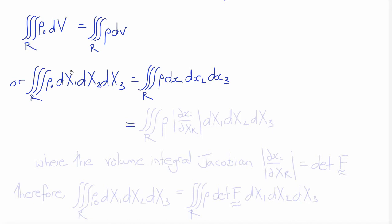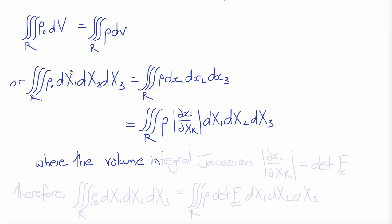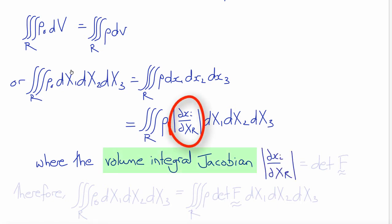We need to convert deformed coordinates to undeformed coordinates in our integral. We do that using partial derivatives in a chain rule, ∂x_i/∂X_r. The expression you get when deriving the conversion from dx₁ dx₂ dx₃ to dX₁ dX₂ dX₃ is actually the determinant of ∂x_i/∂X_r, which is known as the volume integral Jacobian. As you can see, it is equal to the determinant of the deformation gradient.